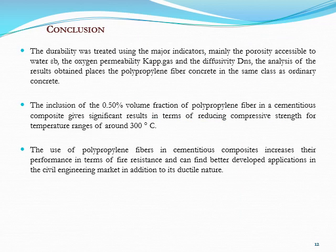In conclusion, the durability analysis of the results places the polypropylene fiber concrete in the same class as ordinary concrete. Second, the inclusion of 0.15 percent volume fraction of polypropylene fiber in a cementitious composite gives significant results in terms of reducing compressive strength loss for a temperature range of around 300°C. In the end, the use of polypropylene fiber in a cementitious composite increases its performance in terms of fire resistance and can find better developments for application in the civil engineering market, in addition to its eco-adaptive nature.